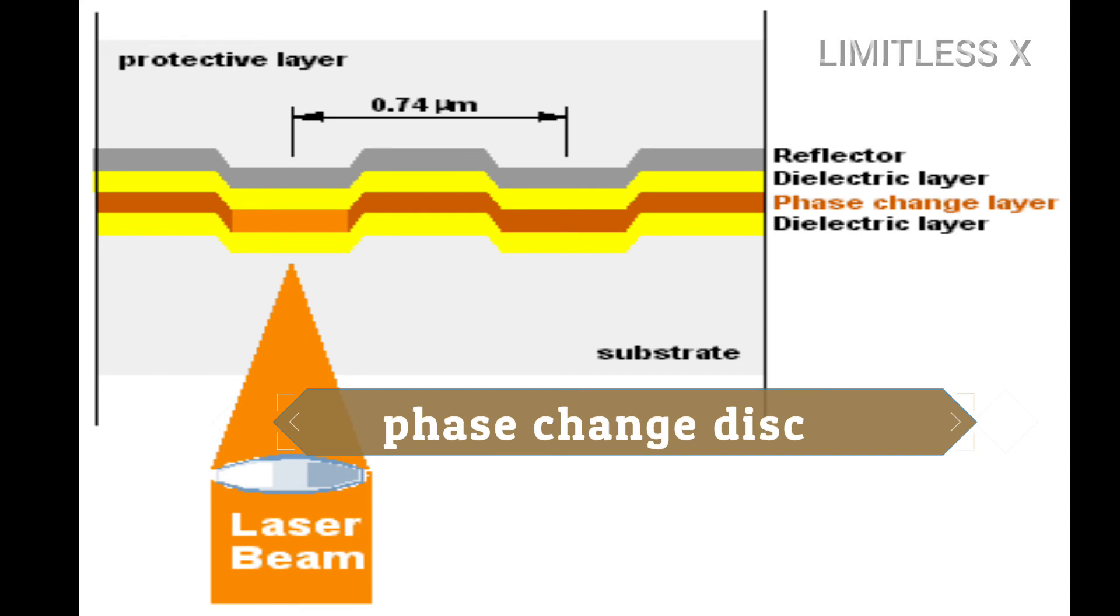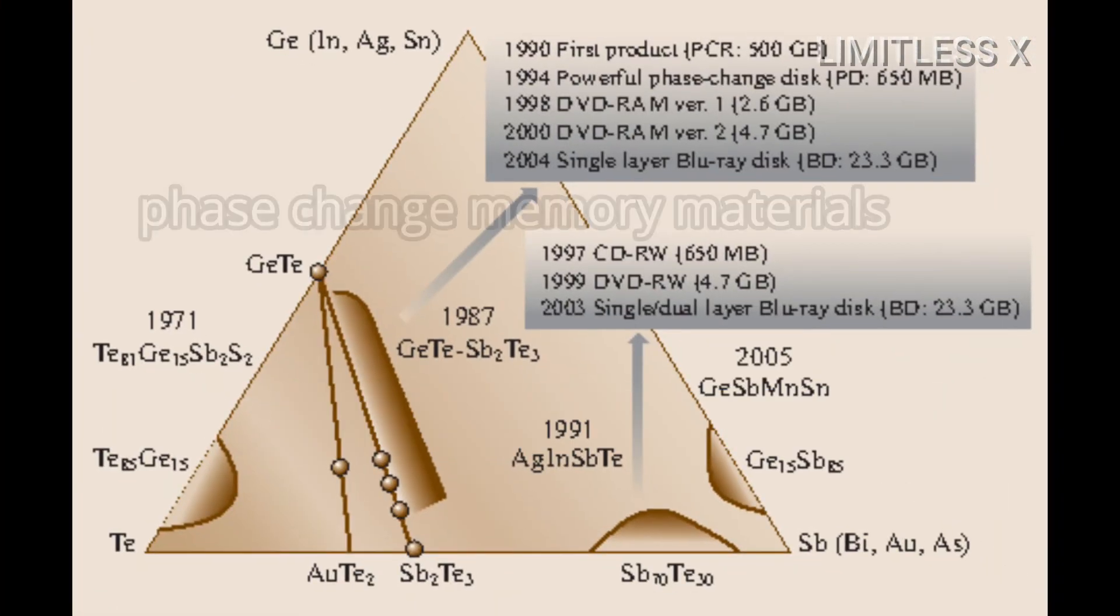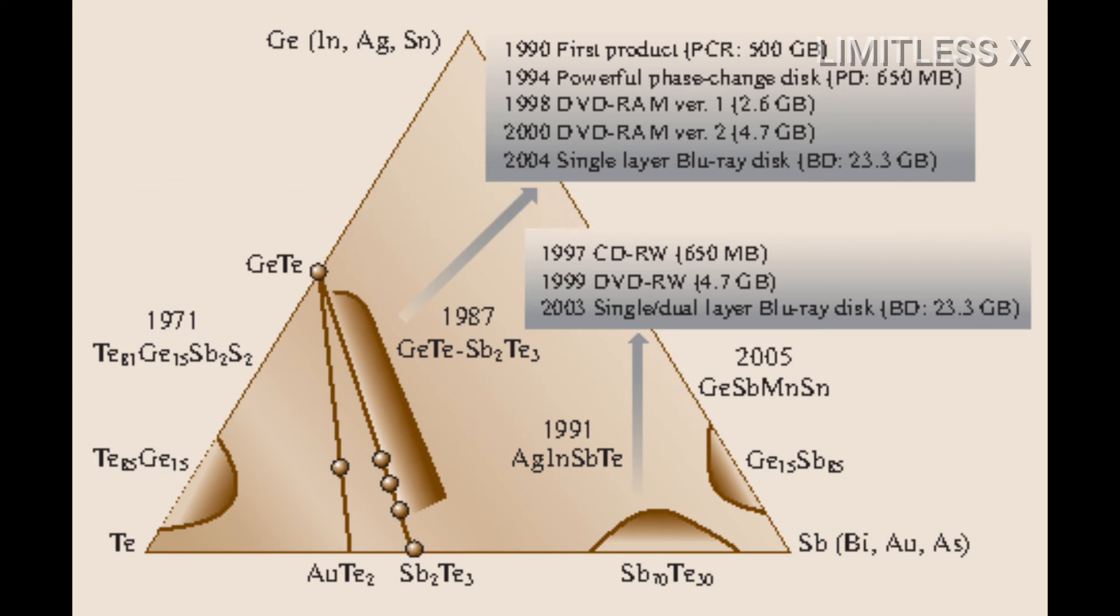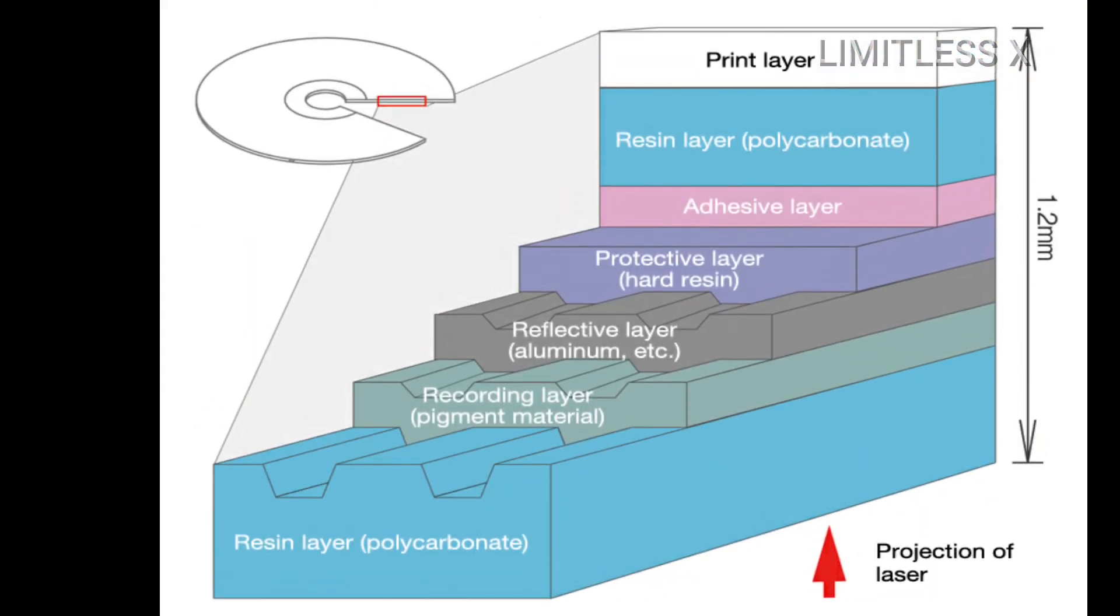Due to the rotation of the disk, the previously illuminated area moves away and its temperature falls. This fall in temperature crystallizes the new structure. Areas with different molecular structures correspond to the illumination of the region by the red laser.